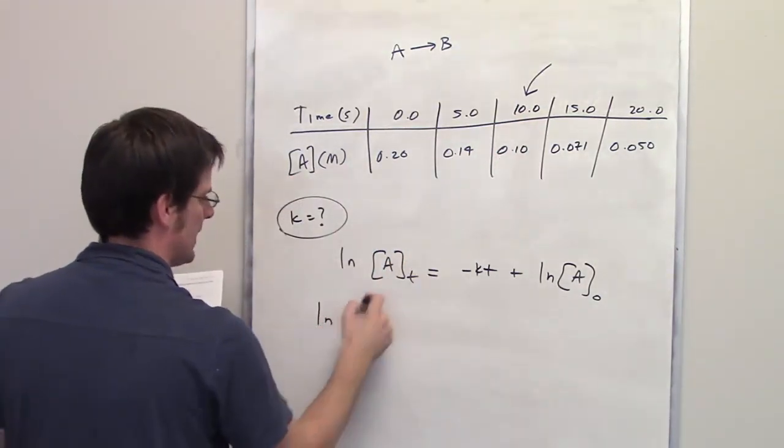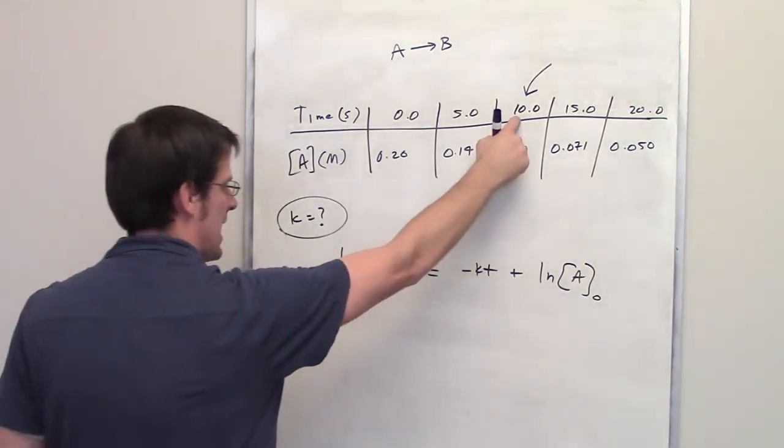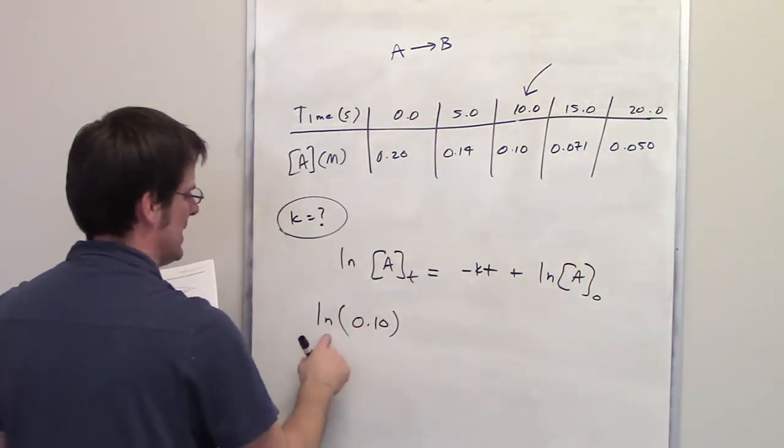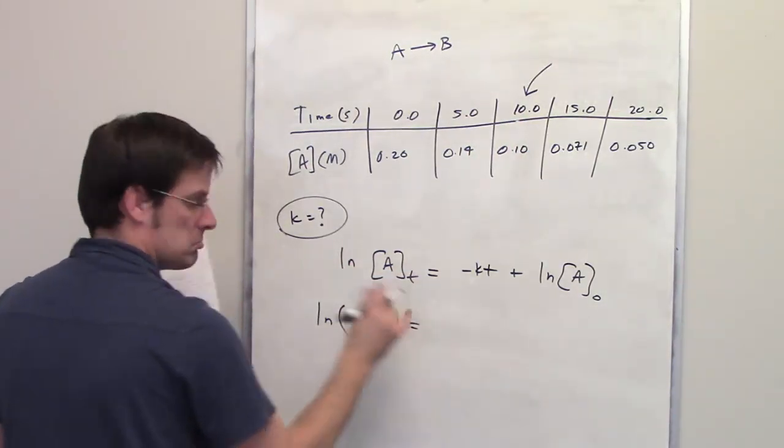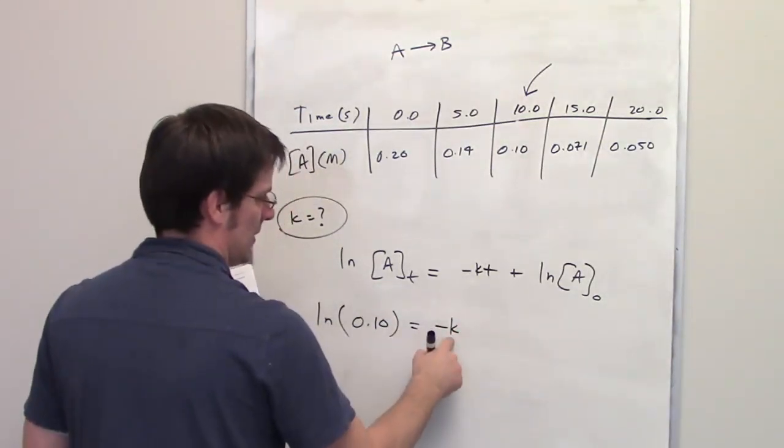So down here, this term right here is the concentration of A at time T. So when T equals 10, the concentration is 0.1. So I'm going to type or throw in the ln of 0.1. You good so far? K is what I'm trying to solve for, so I'm going to put negative K here.